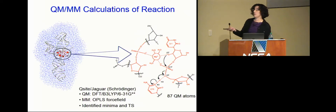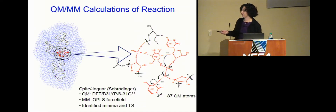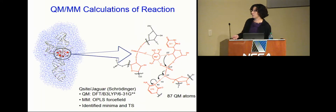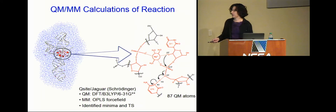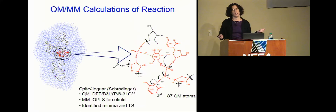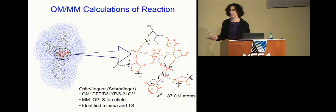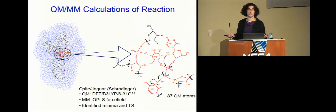We use QM/MM calculations on this huge system — the entire ribozyme solvated in water, hundreds of thousands of atoms. We zoom in on the active site and treat only 87 atoms quantum mechanically. We use Q-site and JAGUAR from the Schrödinger suite for these QM/MM calculations. Initially, we identify minima on the potential energy surface and saddle points connecting them — called transition states — which tells us something about how this works. We actually don't need supercomputers for that part; it's relatively fast.